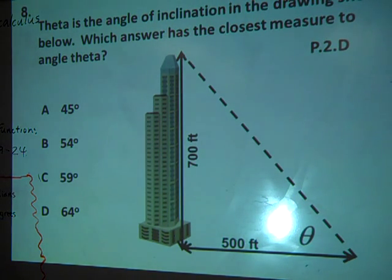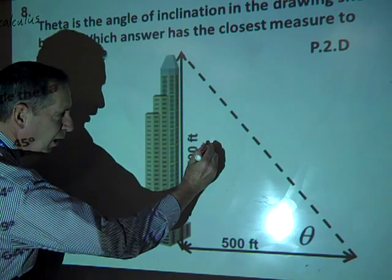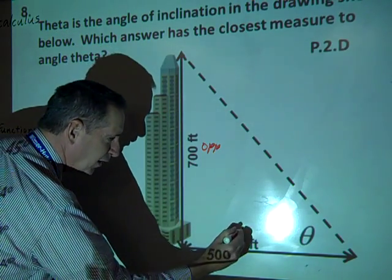You can find the inverse of tangent, right? Why do you know it's tangent? Because you have opposite over adjacent.